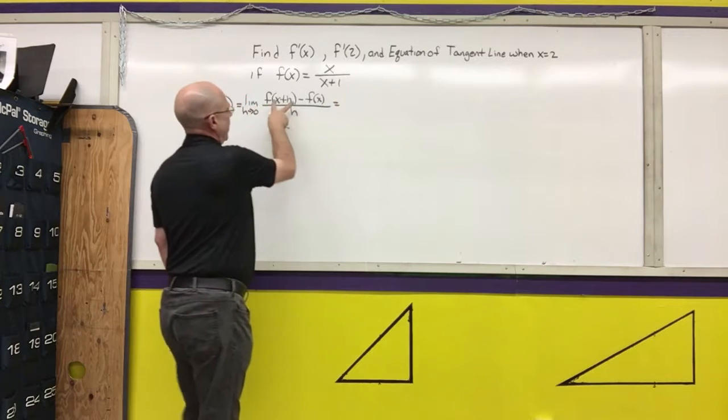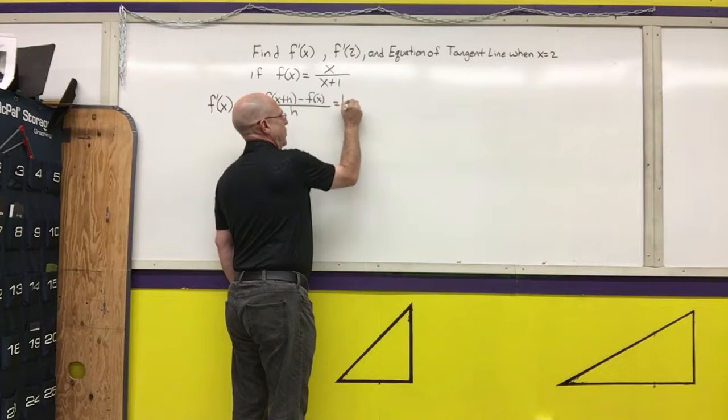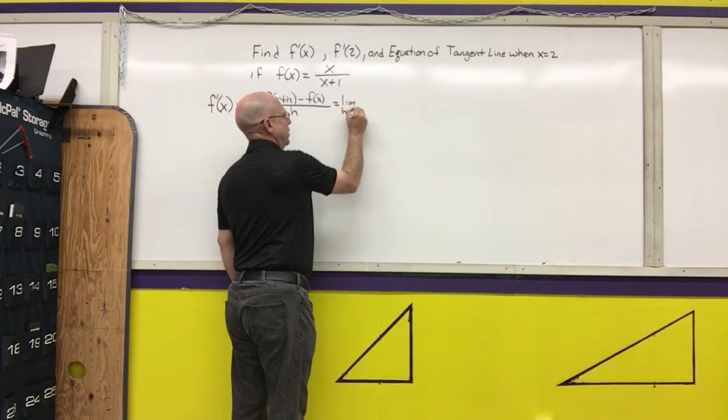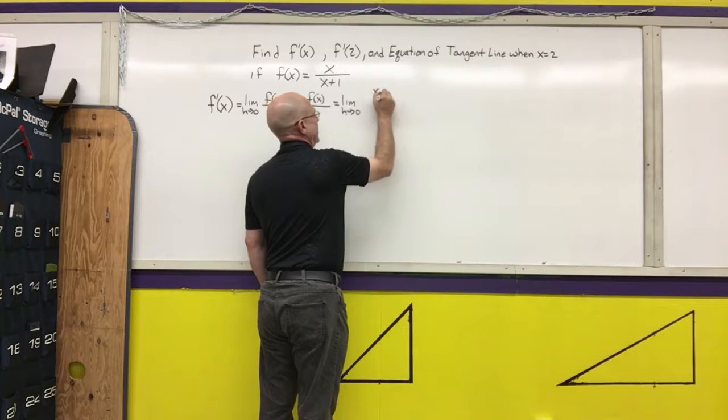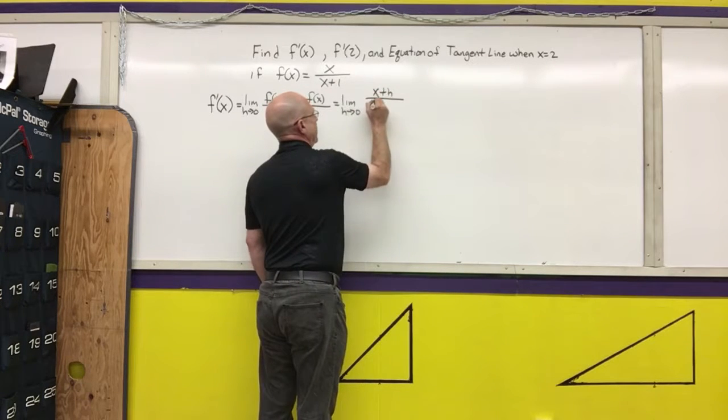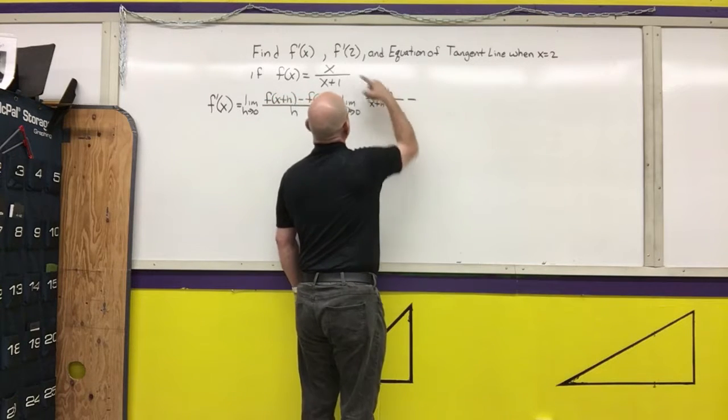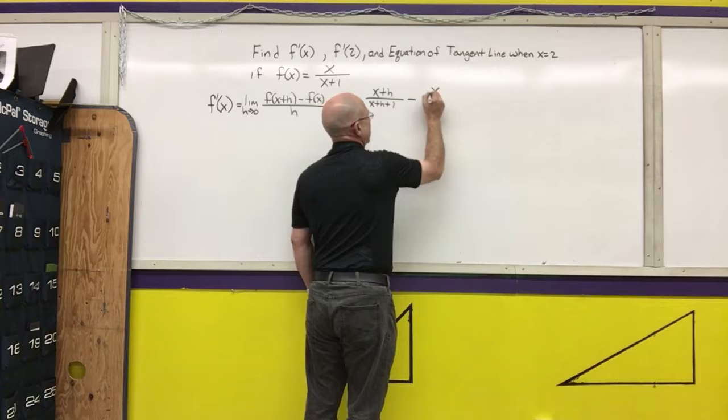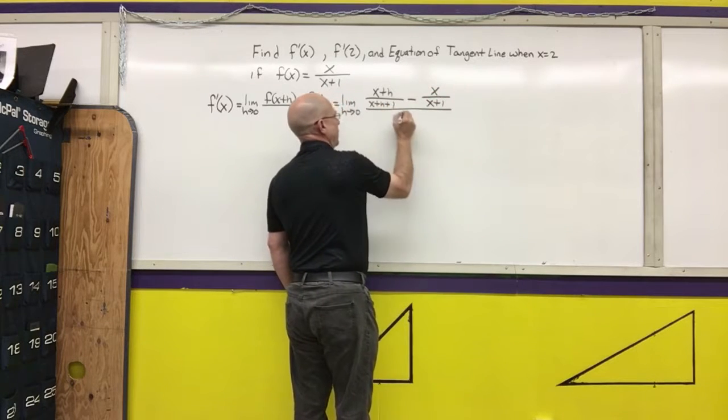We're now going to put f of x plus h and f of x into the function. Remember to copy the limit until you take it. So f of x plus h would be x plus h over x plus h plus 1, minus the original function, which is x over x plus 1, all over h.